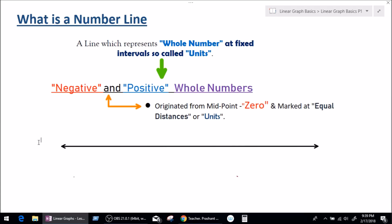A number line is a line which represents whole numbers at fixed intervals, so-called units. A number line represents numbers — what kind of numbers? Both positive and negative numbers.